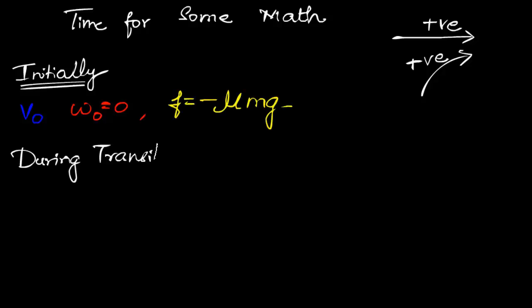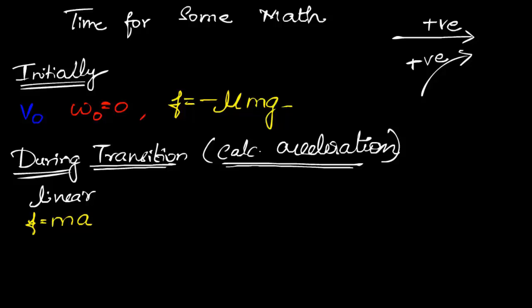Next, during the transition of the sliding and rolling, we have accelerations. For linear, we use the famous f equals ma. Notice the minus sign representing the deceleration.